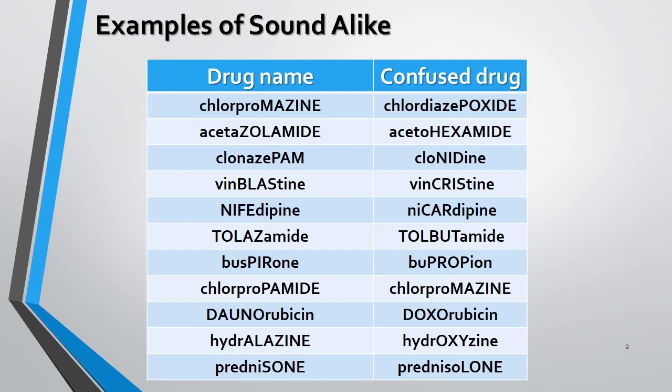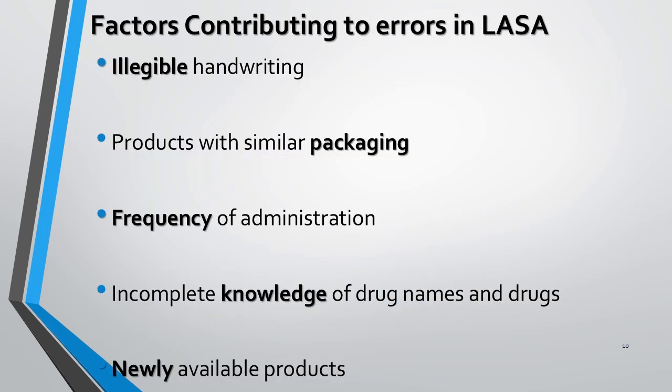These drugs are categorized under high-risk medications. One factor that can cause errors while dispensing LASA drugs is unreadable or scribbled writing in the prescription by the physician, which can lead to administration of an unintended medication that looks alike or sounds alike with the intended one.